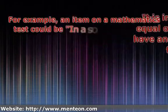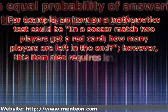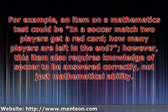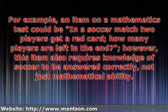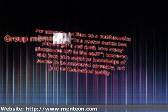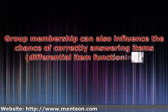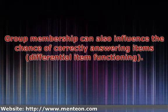It is important that people who are equal on the measured construct also have an equal probability of answering the test items correctly. For example, an item on a mathematics test could be: in a soccer match, two players get a red card — how many players are left in the end? However, this item also requires knowledge of soccer to be answered correctly, not just mathematical ability. Group membership can also influence the chance of correctly answering items — this is known as differential item functioning.